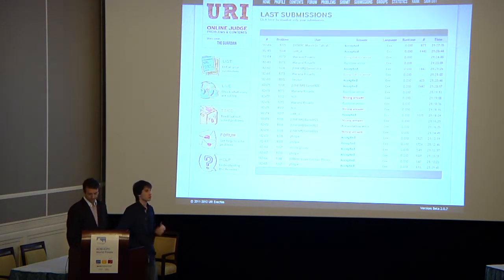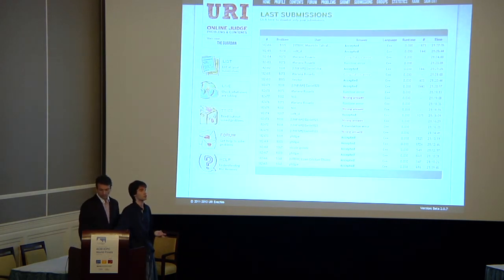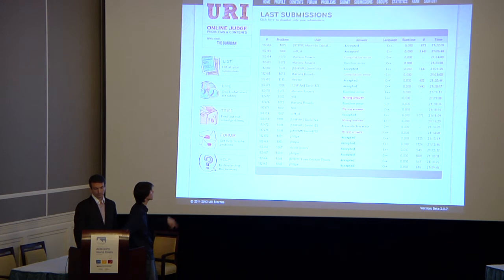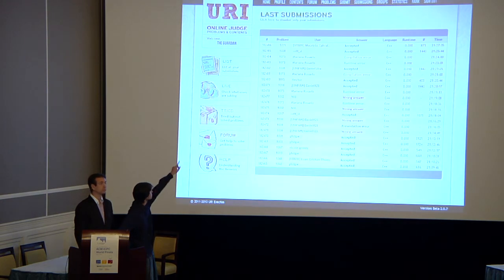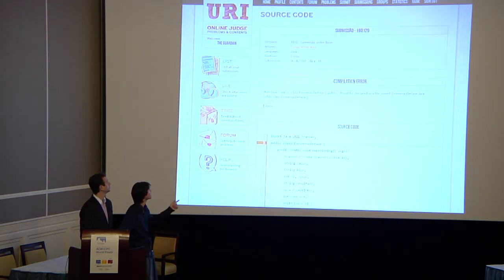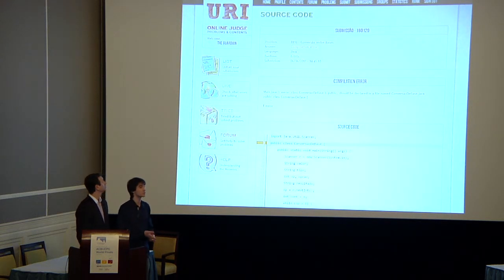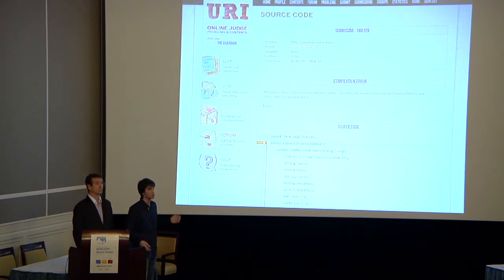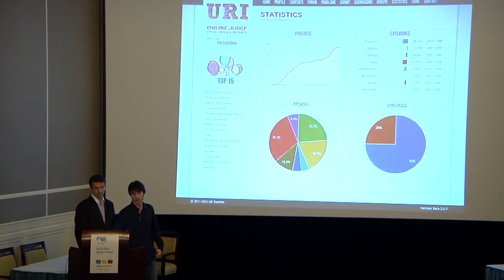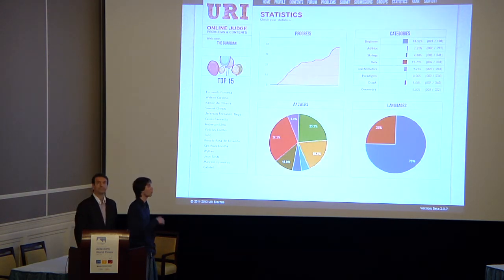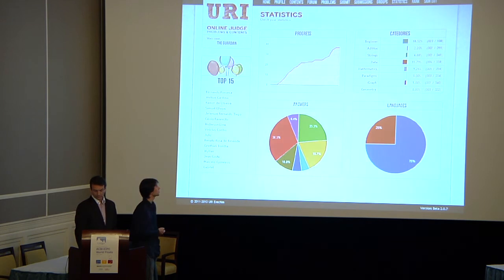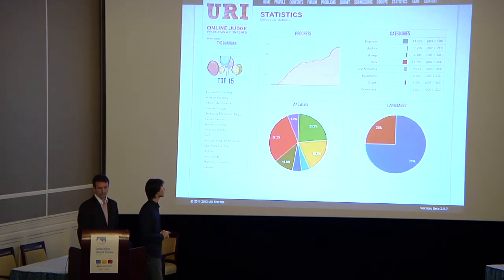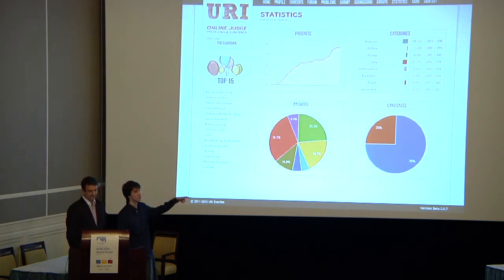We have the last submissions page, which constantly updates so you can see what other users are solving — you might say, 'I will try to solve the same problem as that user.' If you click on one of those submission IDs or on the answer, you'll be redirected to a page with more information about that submission. For example, one received a compilation error with a description and the line number. We also have a statistics page where users can see their progress over years and months, how many problems from each category they've solved, and two graphs — one related to answers and the other to language used.